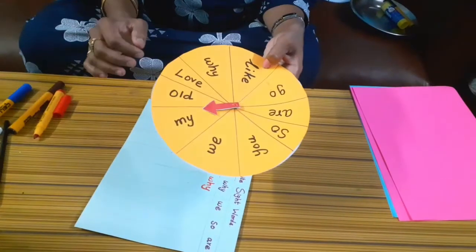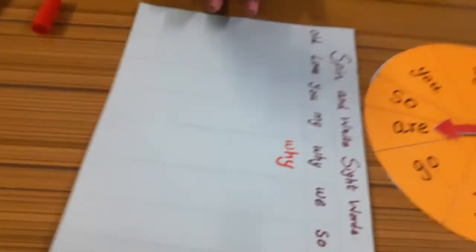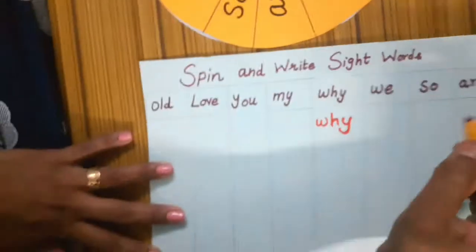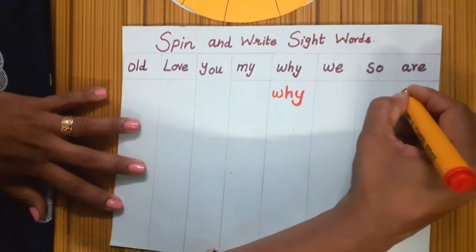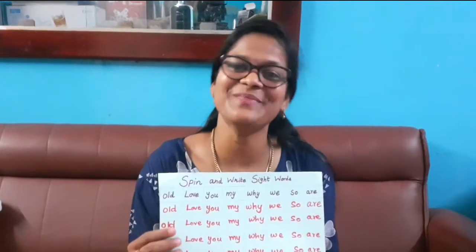Come on, let's spin and write the next word. What word is it? 'Are'. Where is 'are'? Let's write 'are'. Spin and write the sight words like this. Don't forget, while writing the sight words, spell and write. Come on, let's see the next activity.